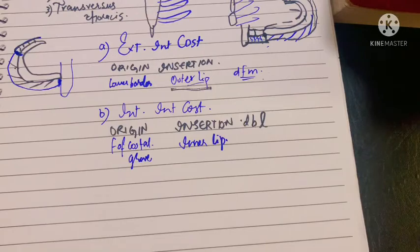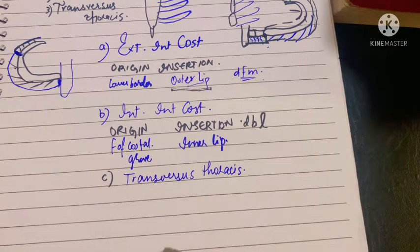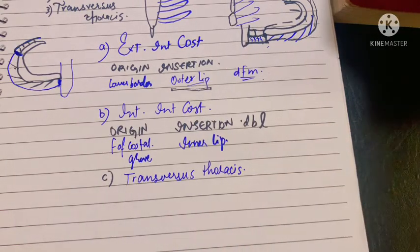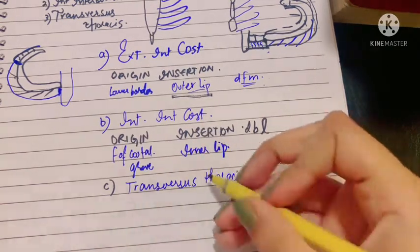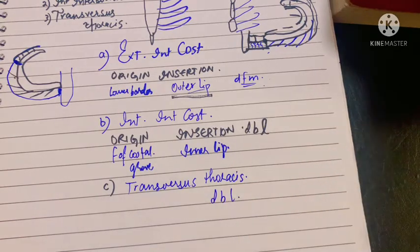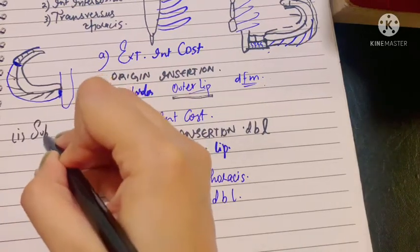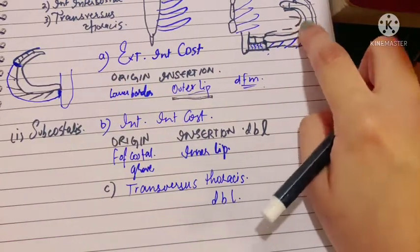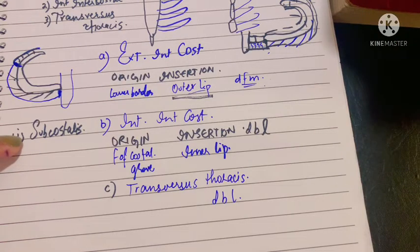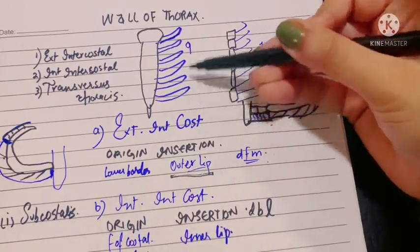Then we have the transversus thoracis muscle, which has three parts: the subcostalis, the intercostalis intimi, and finally the sternocostalis. The direction of fibers of the transversus thoracis is similar to the internal intercostal muscle — downwards, backwards, and laterally. The first part, the subcostalis, originates from the inner surface of the rib near its angle and gets inserted into the inner surface of the two or three ribs below. It is important to remember that the subcostalis is mostly found in the lower ribs.